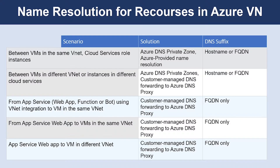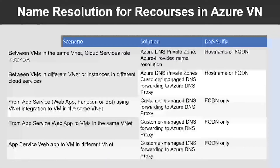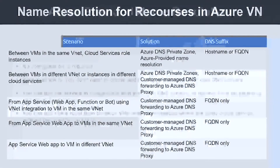If you use Azure provided DNS, then the appropriate DNS suffix will be automatically applied to your virtual machines. For all other options, you must either use fully qualified domain names or manually apply the appropriate DNS suffix to your virtual machines.